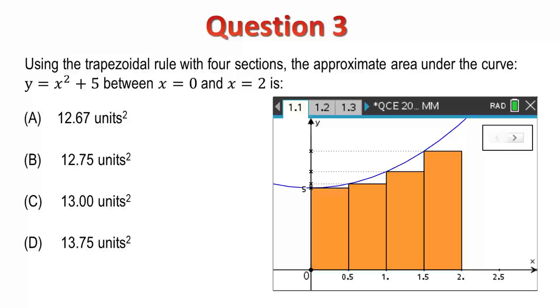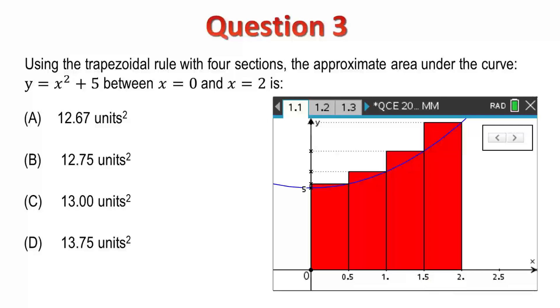It's the averaging of a series of left-bound and right-bound rectangles. The heights of the left-bound rectangles correspond to f of 0, f of 0.5, f of 1, and f of 1.5, each with a width of a half. The right-bound rectangles have heights f of 0.5, f of 1, f of 1.5, and f of 2. Again, all with a width of 0.5.